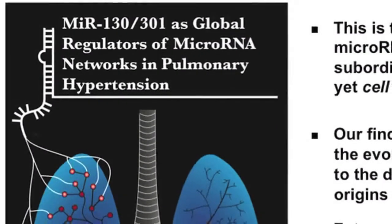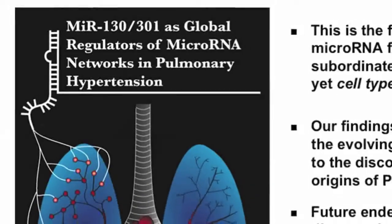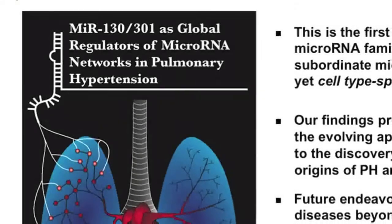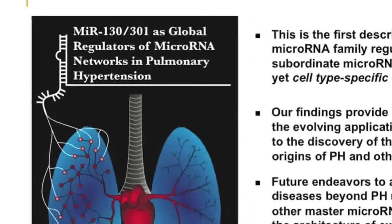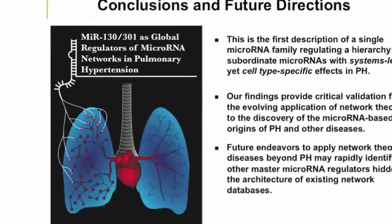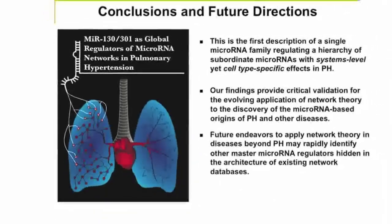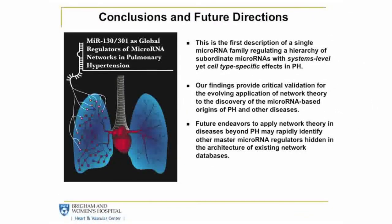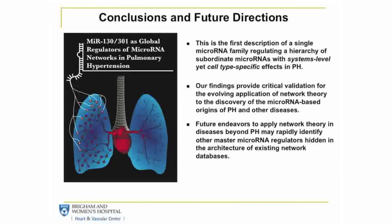In conclusion, we believe that this is the first description of a single microRNA family regulating a hierarchy of subordinate microRNAs with systems-level, yet cell-type-specific effects in PH. We believe that deciphering such systems-level relationships should guide the development of more effective and perhaps more potent clinical management strategies in pulmonary hypertension. Perhaps more importantly, our findings provide critical validation for the evolving application of network theory to the discovery of microRNA-based origins of pulmonary hypertension. And we hope this work can serve as a basis for the search in separate human diseases for other microRNA master regulators that are otherwise hidden in the architecture of existing network databases. Thank you very much for your interest, and on behalf of all of the authors, I hope you enjoy reading our work.